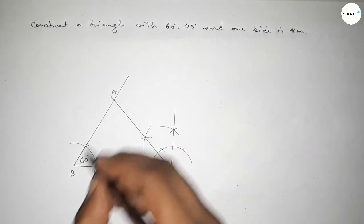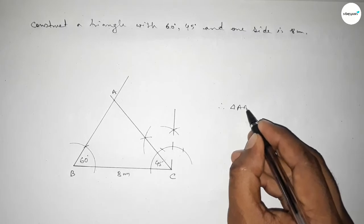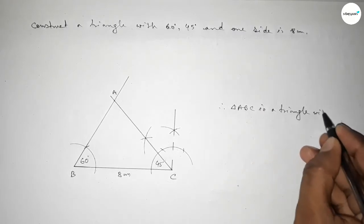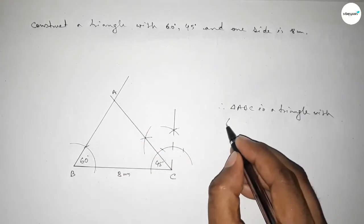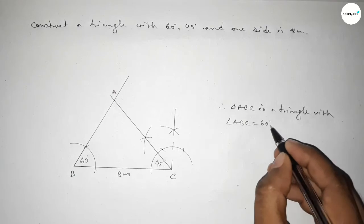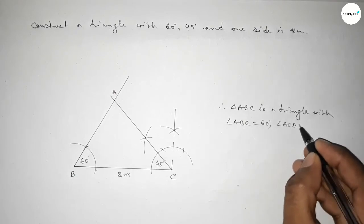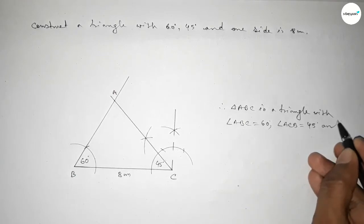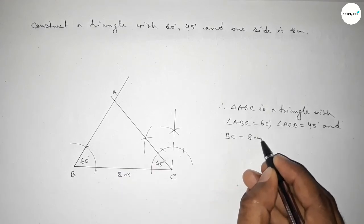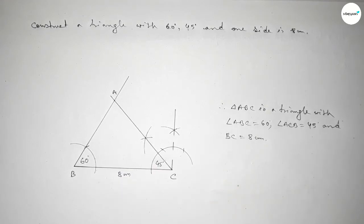This is 8 centimeters, this angle is 60 degrees, and this angle is 45 degrees. Therefore triangle ABC is a triangle with two given angles: angle ABC equals 60 degrees, angle ACB equals 45 degrees, and one given side BC equals 8 centimeters. That's all — thanks for watching. If this video is helpful to you, please share it with your friends.